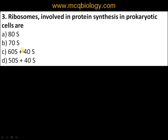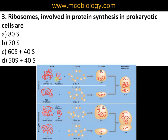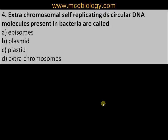Question number three: ribosomes involved in protein synthesis in prokaryotic cells are: A) 80S, B) 70S, C) 60S + 40S, D) 50S + 40S. This is a typical character of a prokaryotic cell — the ribosome is 70S, made up of a larger subunit of 50S and a smaller subunit of 30S. In eukaryotes, it is 60S plus 40S, forming an 80S ribosome.